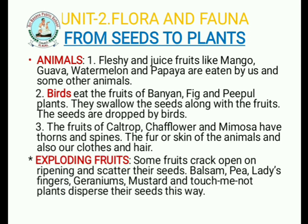The last point of this chapter is exploding fruits. Some fruits crack open on ripening and scatter their seeds. Examples are balsam, pea, ladyfingers, geraniums, mustard, and touch-me-not plants — they disperse their seeds this way. For example, green gram pods, after drying, burst or explode, and the seeds spread around the plant. These exploding fruits are a very important agent of dispersal.